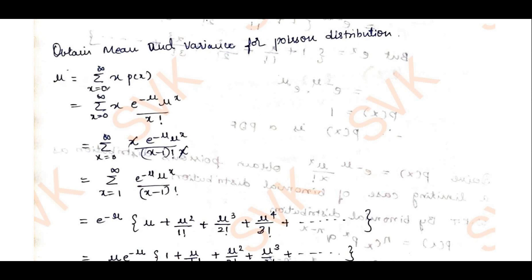Consider mean mu(x) equal to summation x equals 0 to infinity of x into P(x). For Poisson's distribution, P(x) is defined as e to the power minus mu, into mu to the power x, divided by x factorial. Substituting this definition of P(x) into the mean expression.